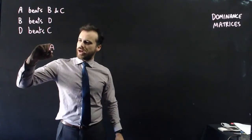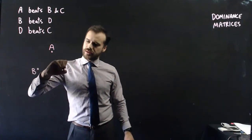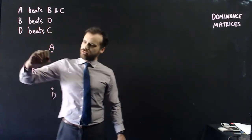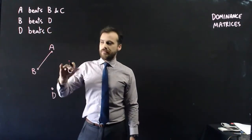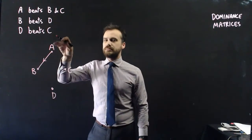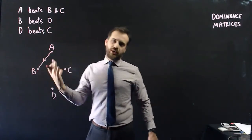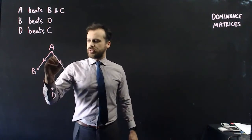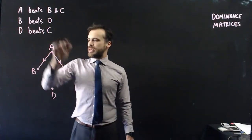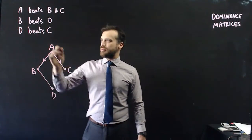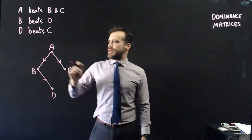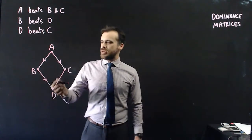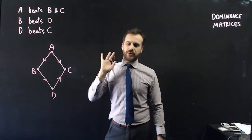I put in A, B, C, D, and draw edges depending on who won or lost. A beat B, so I draw a line between A and B, and the arrow goes in the direction of whoever's being dominated — B was dominated by A. A beat C, so the arrow goes that direction. B beat D, so an arrow goes towards D. And D beat C, so the arrow goes toward C.